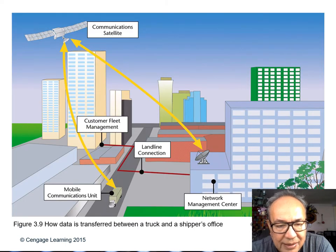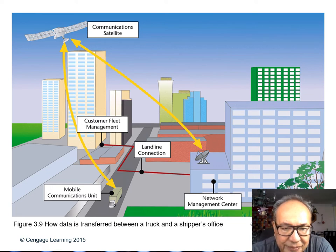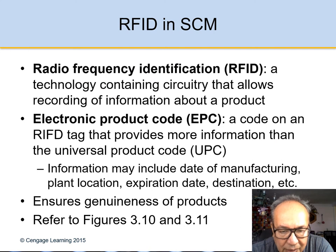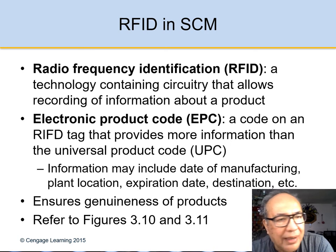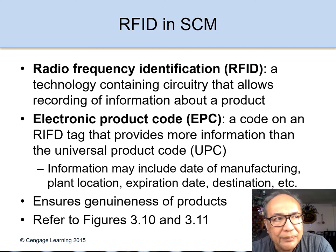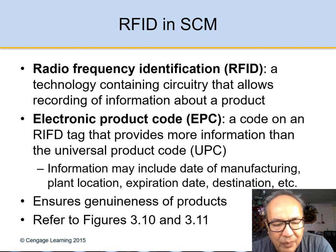This is the shipping from the truck to its route. Radio frequency identification records information about the product. For example, I ordered something from Walmart today and they told me the product will arrive next Wednesday — so now I know when the product is coming to my house. These are the programs we use to do that.